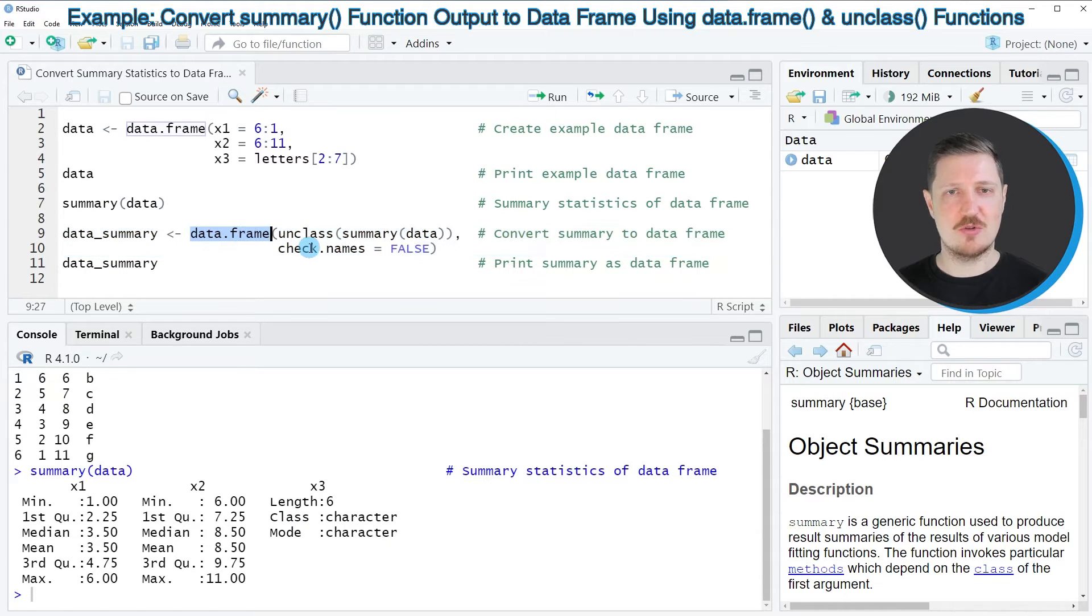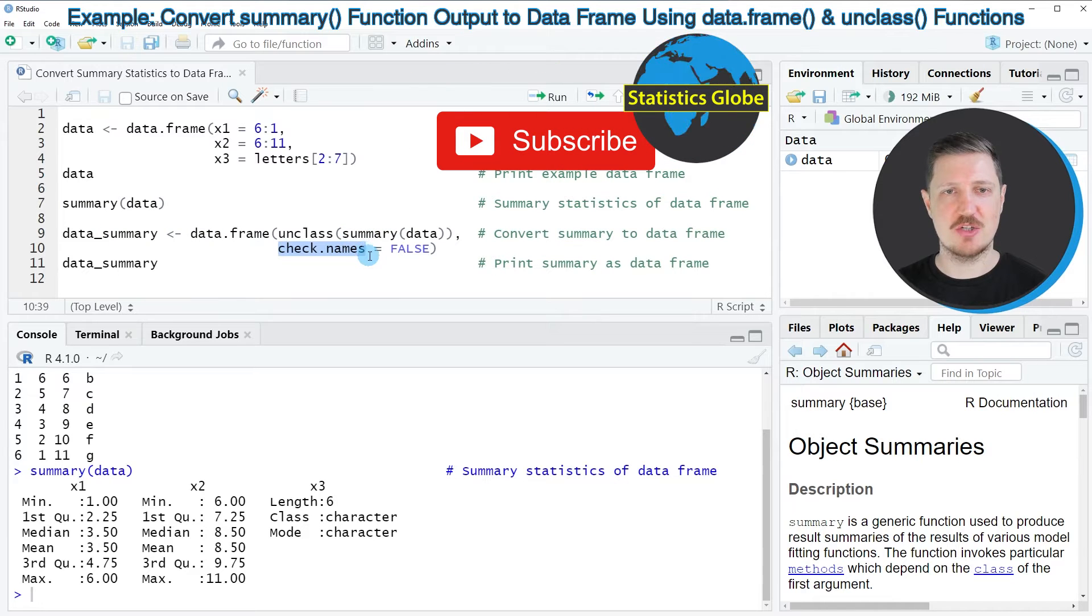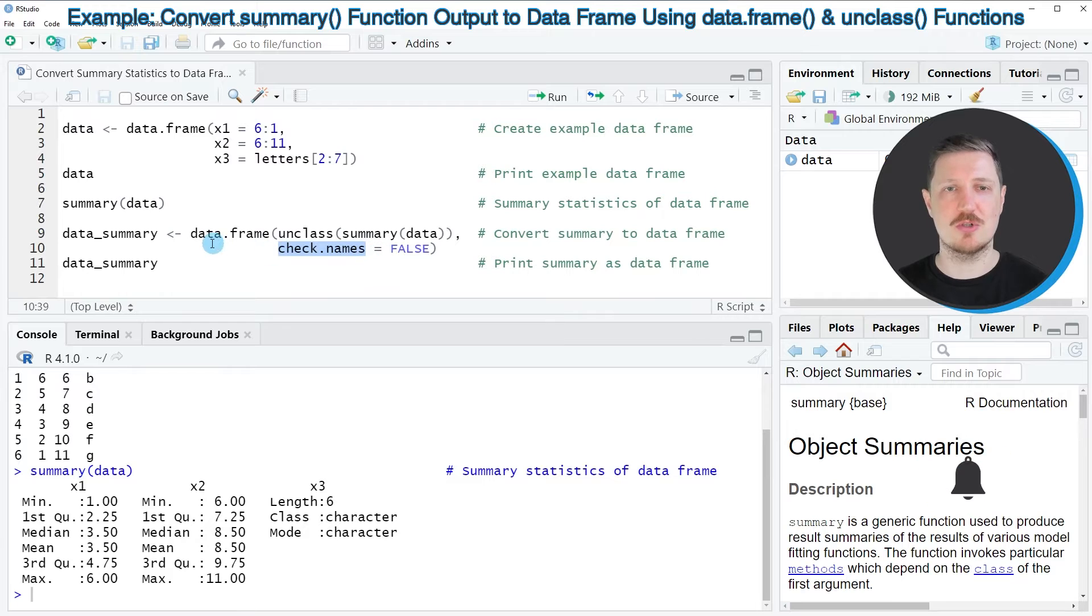In these lines of code, I'm using the data.frame function in combination with the unclass function and the summary function. Within the data.frame function, I'm also specifying the check.names argument to be equal to FALSE. Then I'm storing the output in a new data object called data_summary.